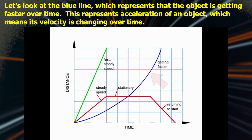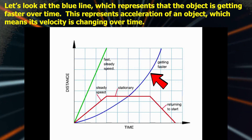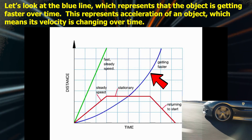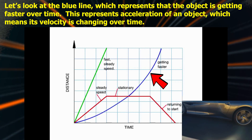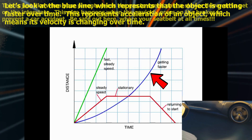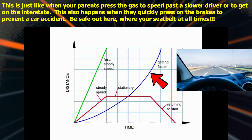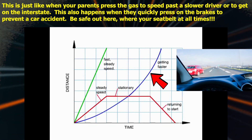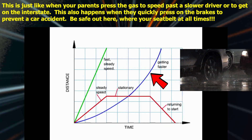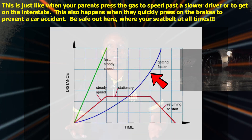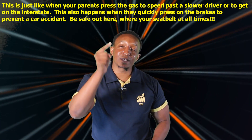Let's look at the blue line, which represents an object getting faster over time. This blue line represents acceleration, which means its velocity is changing over time. This is just like when your parents press the gas to speed past a slower driver or to get on the interstate — or when they quickly press the brakes to prevent an accident. Be safe out here. Wear your seat belt at all times.